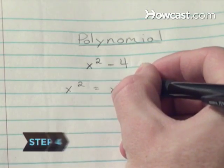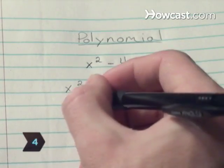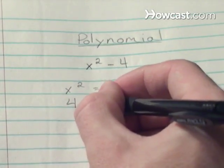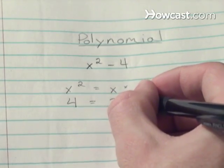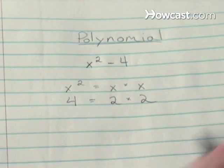Step 4: Finding the difference of two squares is another type of factoring. In the expression x squared minus 4, x squared is the square of x and 4 is the square of 2.